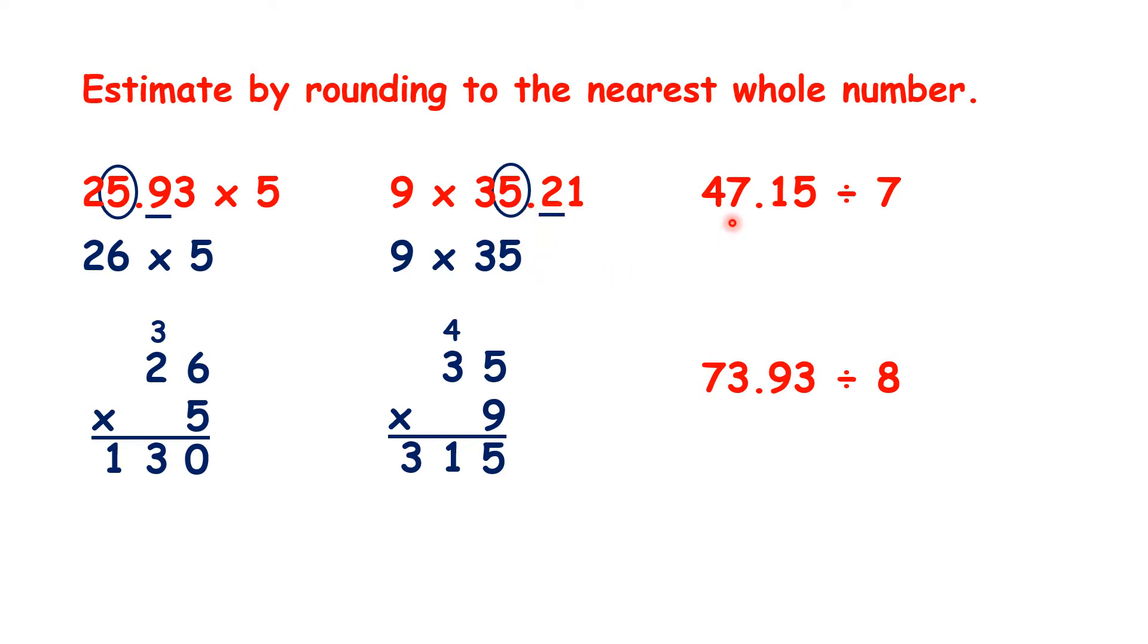Now, onto division. 47.15 to the nearest whole number is 47, and 47 divided by 7 is 6 remainder 5, or 6 and 5 sevenths.